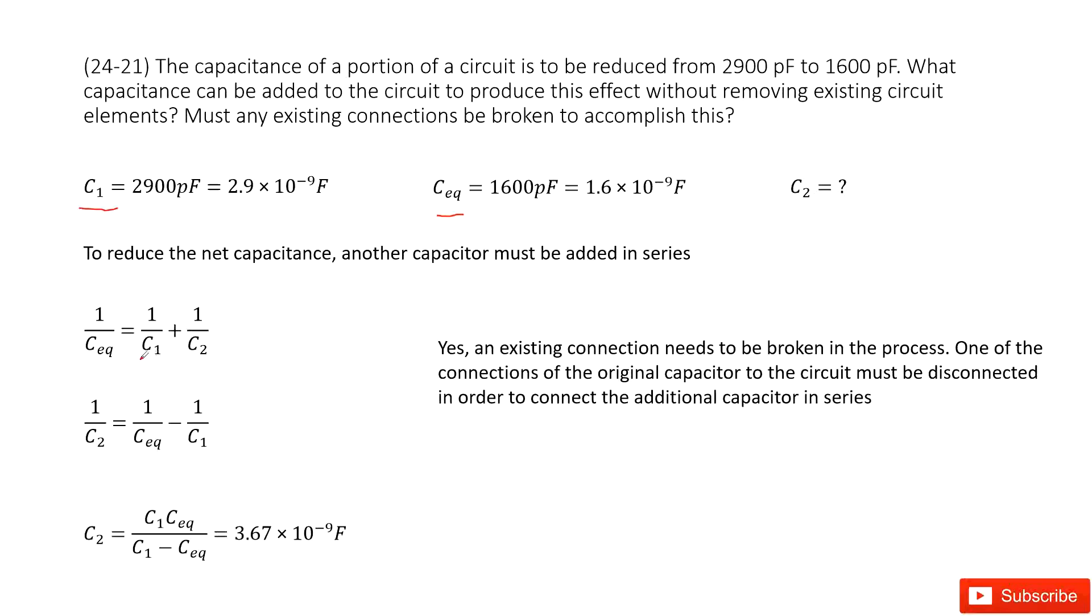Initially, we can see it's C1. And then we can add the C2 to make it be the final status C equivalent. So this is the final, and this is the initial, and then we need to add C2.